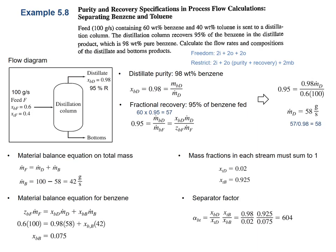Example 5.8: the same benzene and toluene separation, but with slightly different conditions. All feed stream information is given, and instead of mass fractions for the distillate, here one mass fraction of benzene plus either purity or recovery value of benzene is given. Let me analyze the degree of freedom to determine whether this problem is well-specified, under-specified, or over-specified.